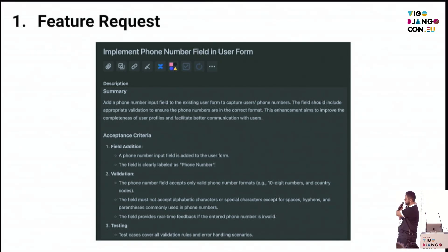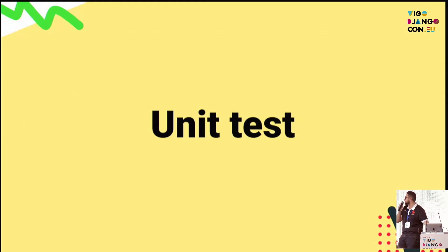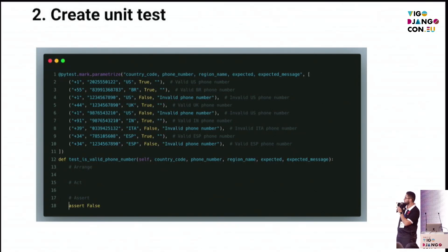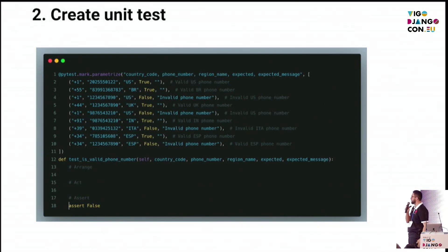You need to improve the test — you need to test the case over all validation rules and error handling. In the unit test, show the code — there is an example. Right now, arriving at the second step, you create a unit test. In this moment, you need to define your test using parameterize. You create the test — for example, the US number is true, the BR number is true, and the invalid US number is false. I create two types to validate my test.